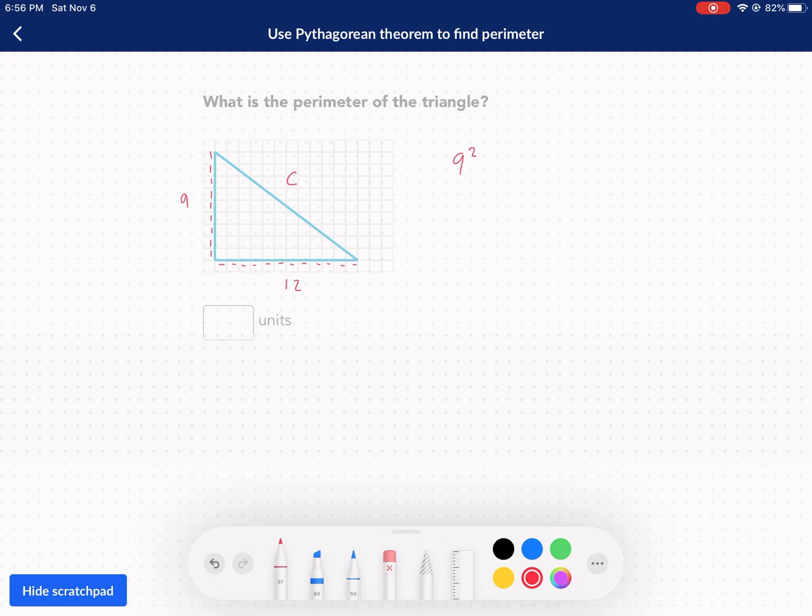We have nine squared and there's our missing side C. So we have nine squared plus 12 squared equals C squared. So I'm going to punch that in. It was 81 plus 144. That give me 225 equals C squared. And I know that square root. That's 15 equals C.